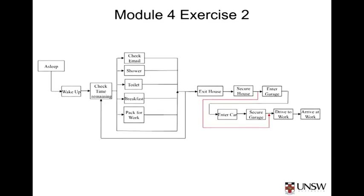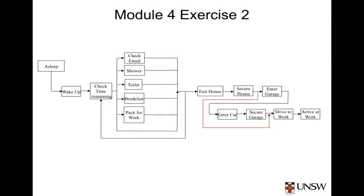From developing this FFPD, we now understand better some of the key functions of the dwelling during the morning — there must be a showering function, a function to support having breakfast, and so on. It's reasonable to assume that many of these things would have been considered even without the FFPD. However, what we've gained is an insight into the relationships between the functions, how one might flow from the other, and how choice needs to be taken into account. This understanding may assist in making decisions about the locations of certain rooms to allow efficient movement. In a more complex system — such as an aircraft or a very complicated building — functional flow block diagrams are very useful in understanding how the system works.